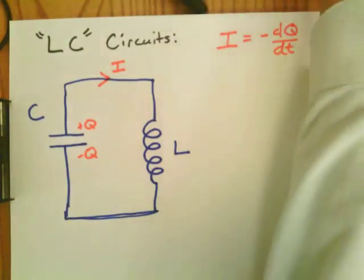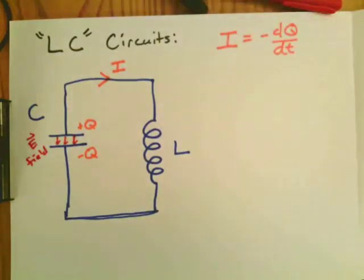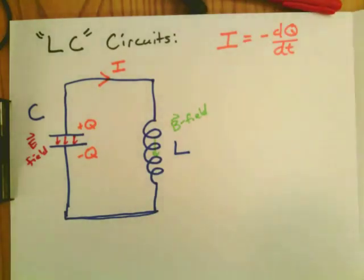The capacitor basically makes a little electric field, and the inductor, as the current flows, will make a magnetic field. So we want to know what's going to happen. We start with an electric field, and then we see what's going to happen.